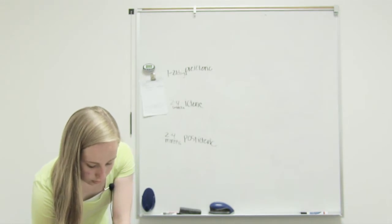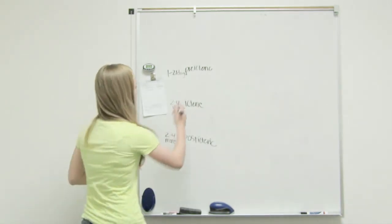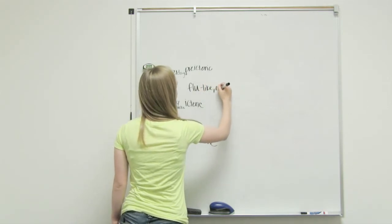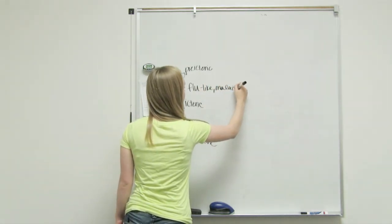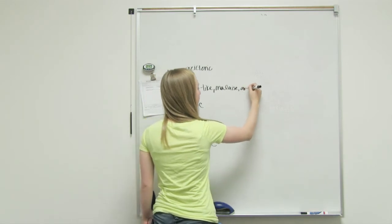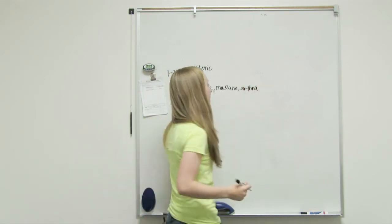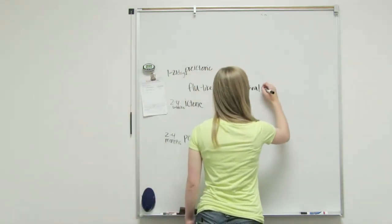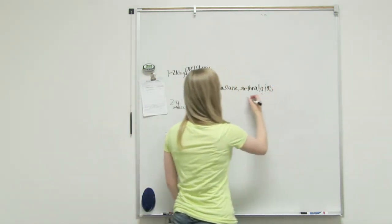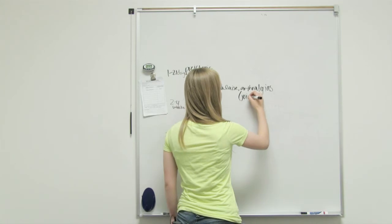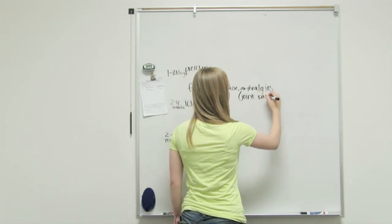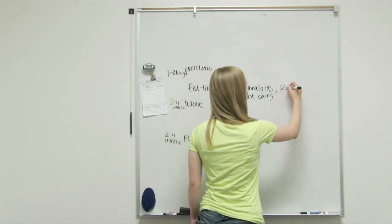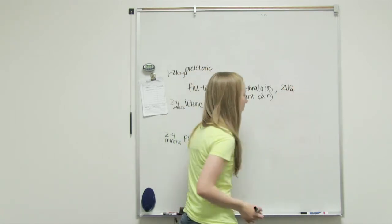Anorexia, nausea, good flu-like symptoms. You might have malaise, which is they feel like crap all over. Arthralgia is joint pain. They could have some right upper quadrant pain, which is where the liver is.